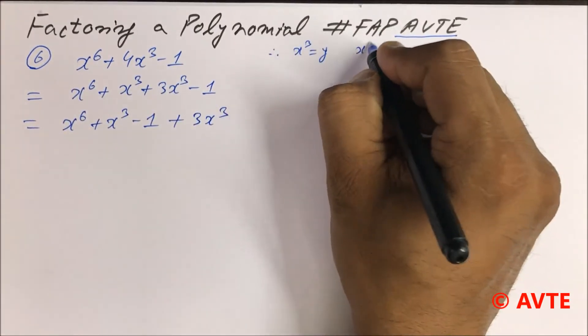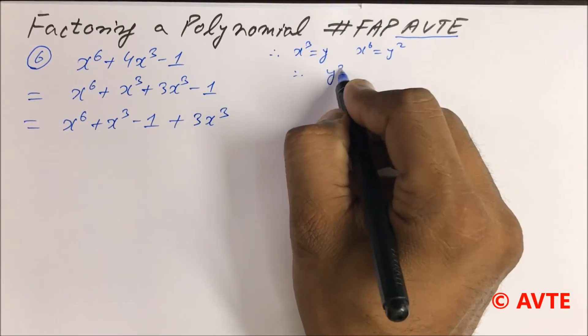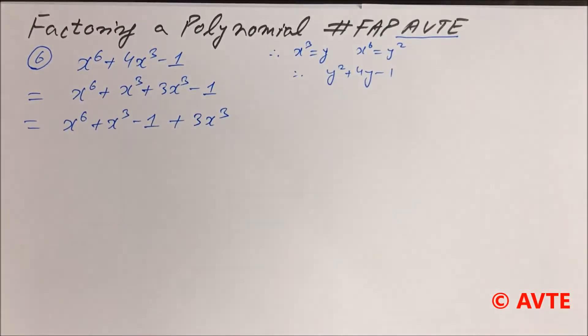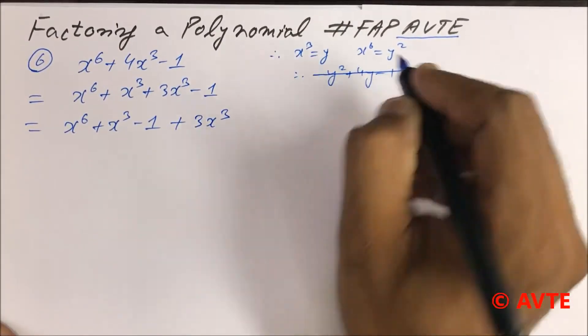And x^6 as y square, you can have y square plus 4y minus 1. And if you find the discriminant of this, you're not able to find the factors. So now you have to think something else.